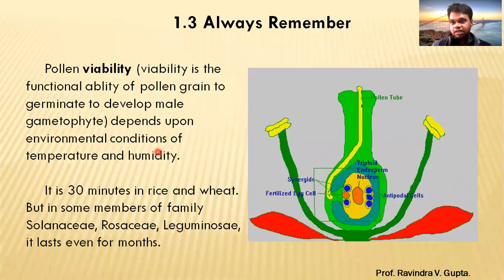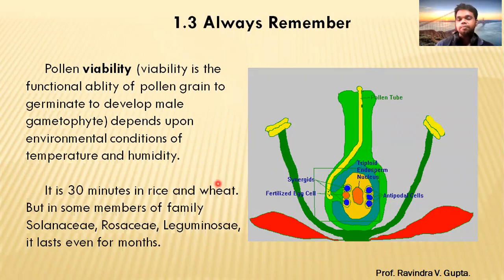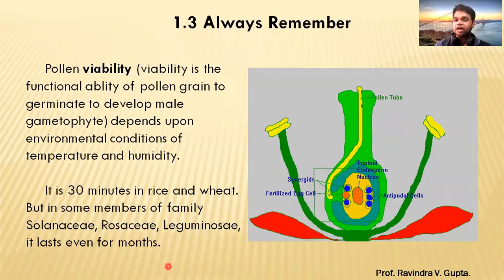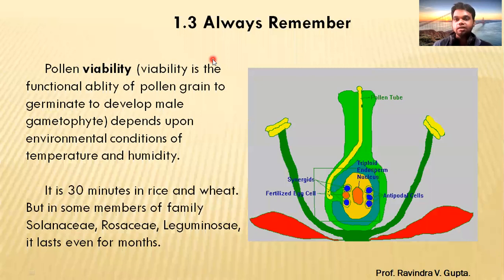Pollen viability is 30 minutes in the case of plants like rice and wheat. The male gametophyte formation timing is 30 minutes for these plants. But for some members of a family, like Solanaceae and legumes, this viability can last even for a month. So viability can vary — for normal plants like rice or wheat it is 30 minutes, while for others it can be up to a month.